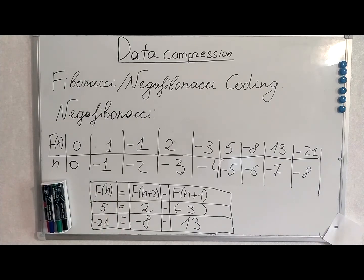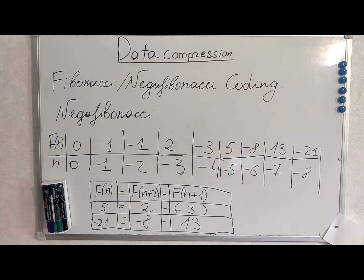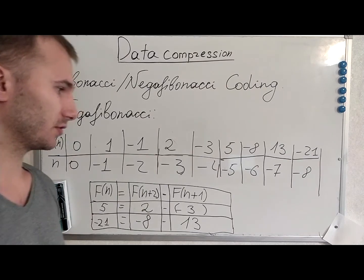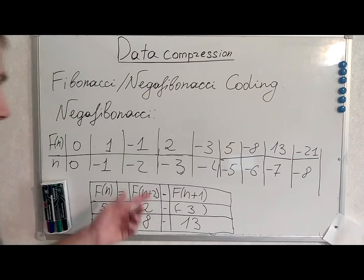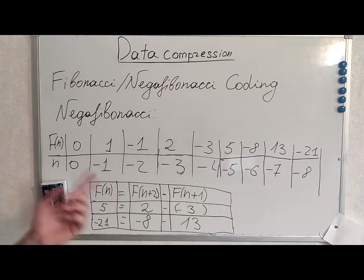Fibonacci and negative Fibonacci are very similar — they are actually the same formula after some mathematical derivations. Each consecutive element in the Fibonacci sequence is made from two previous elements, and in negative Fibonacci the same applies but in a slightly different manner.